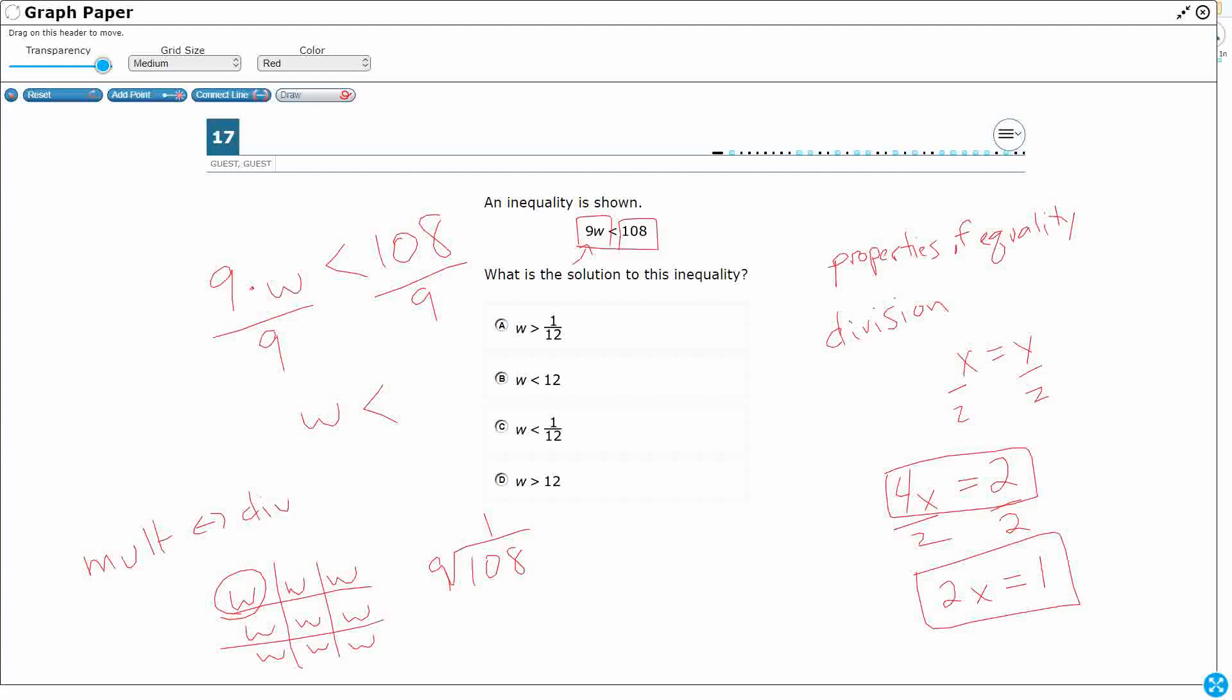That might be a fact that you've memorized. If not, we can still do a little bit of long division, right? That's going to be 12, okay? So 9W is less than 108 is the same thing as W is less than 12.